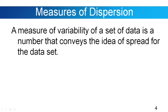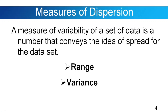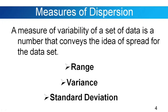A measure of variability of a set of data is a number that conveys the idea of spread for the data set. The following are the measures of dispersion: first, range; second, variance; and third, standard deviation.